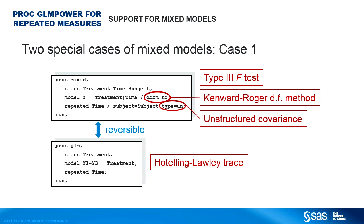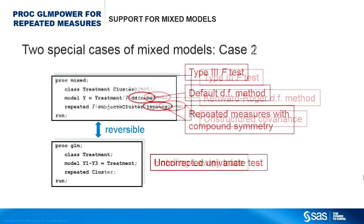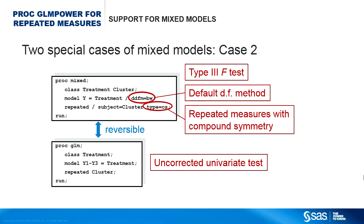There are two popular special cases of analyses that have equivalent PROC GLM and PROC MIXED formulations, referred to as reversible analyses. The first: a PROC MIXED repeated measures analysis with unstructured covariance using the Kenward-Roger degrees of freedom method is equivalent to a PROC GLM analysis using the F test based on the Hotelling-Lawley trace. The second: a PROC MIXED analysis with compound symmetry using the default degrees of freedom method is equivalent to a PROC GLM analysis using the uncorrected univariate F test, and is also equivalent to a random intercept-only model in PROC MIXED.